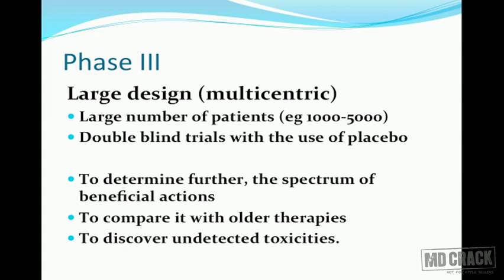Phase three of clinical trials is a large multi-centric design. Whatever was proven at one center must be proven at multiple centers, so a large number of patients — about 1,000 to 5,000 — are included. All these trials will be double blind with placebo or positive control. Phase three determines the spectrum of beneficial actions, compares with older therapies, and discovers any undetected toxicities not revealed during phase two.